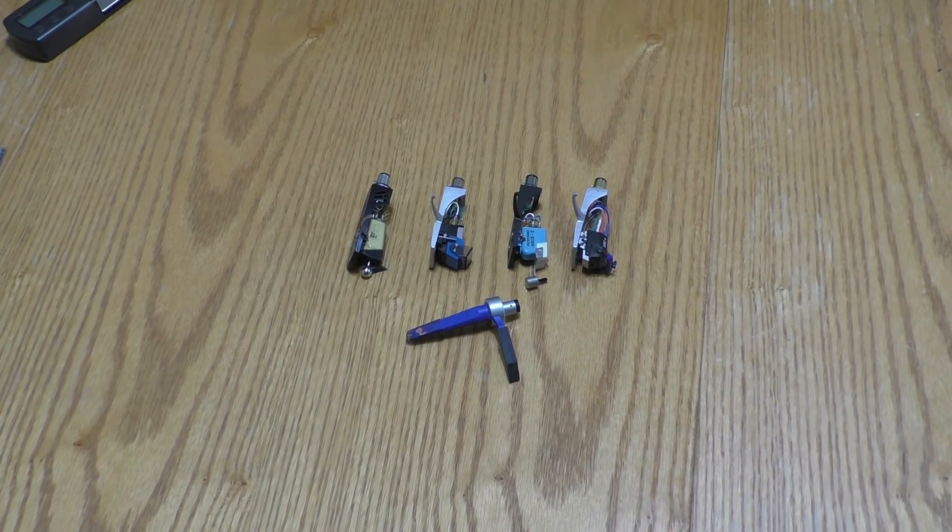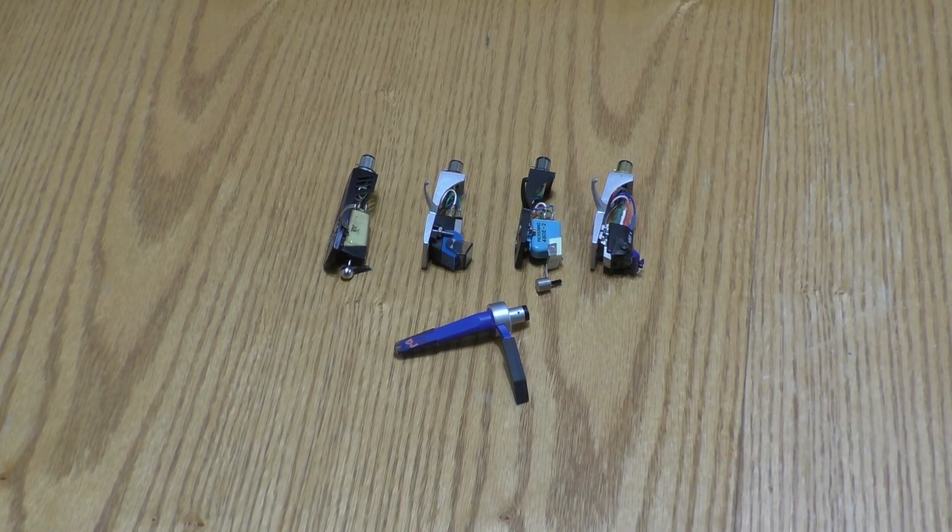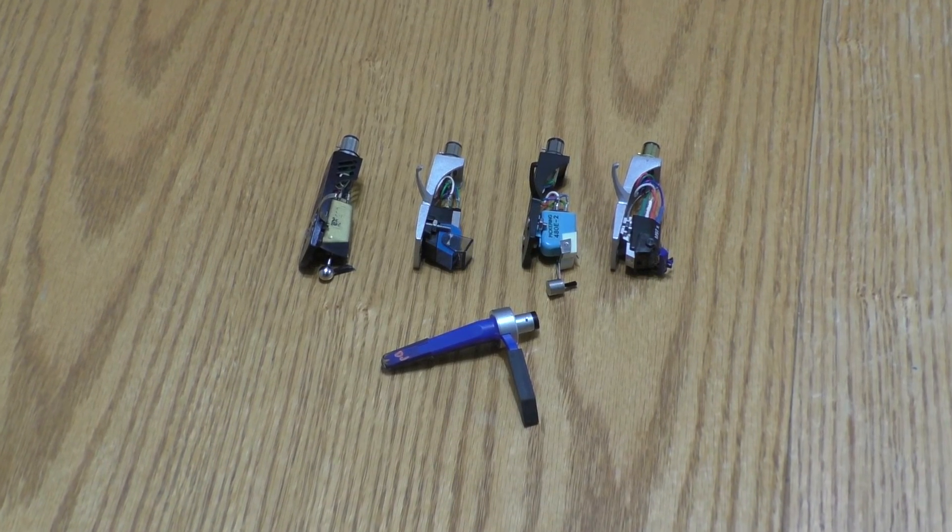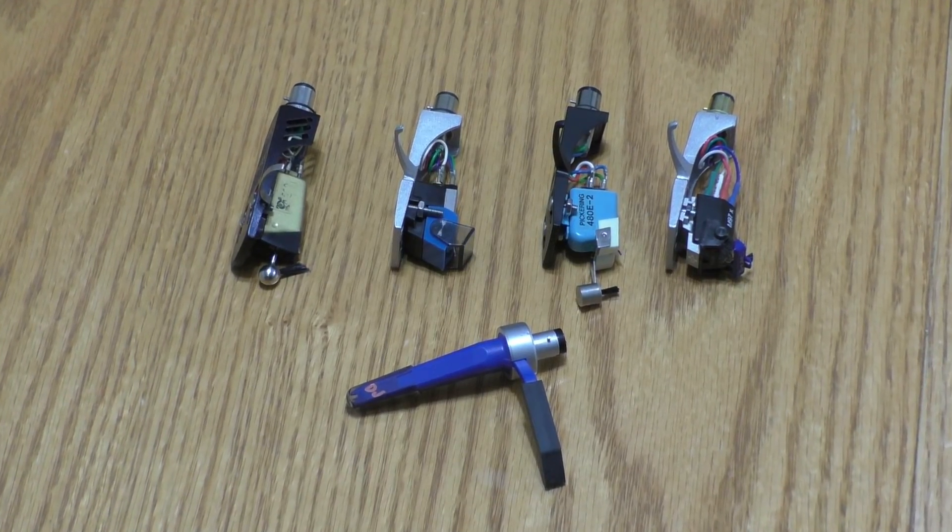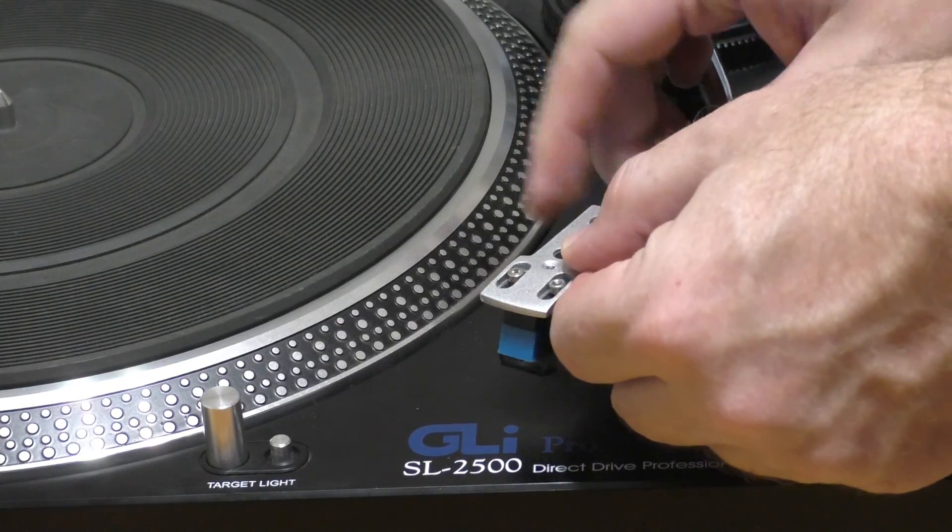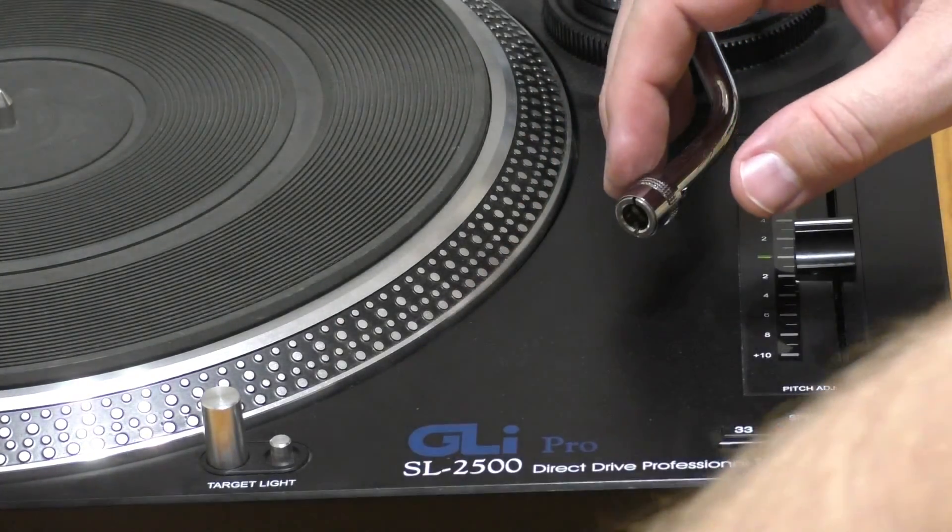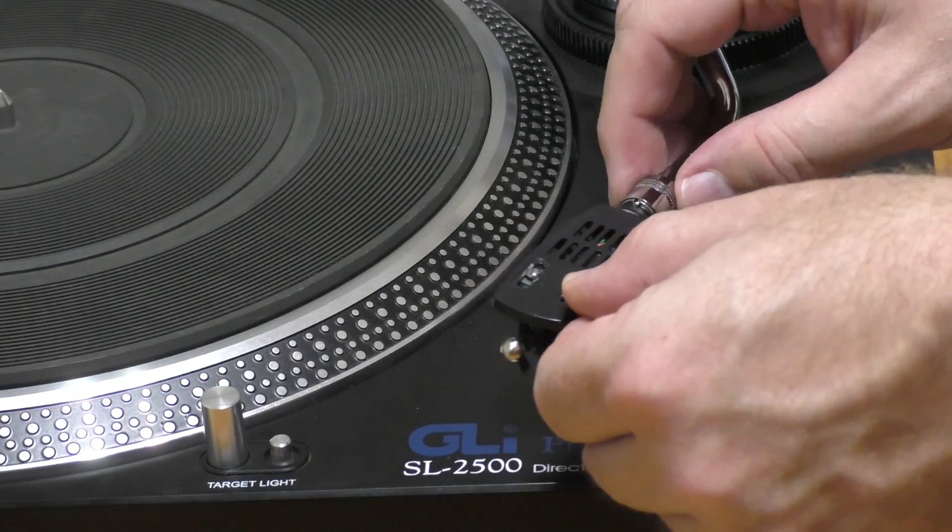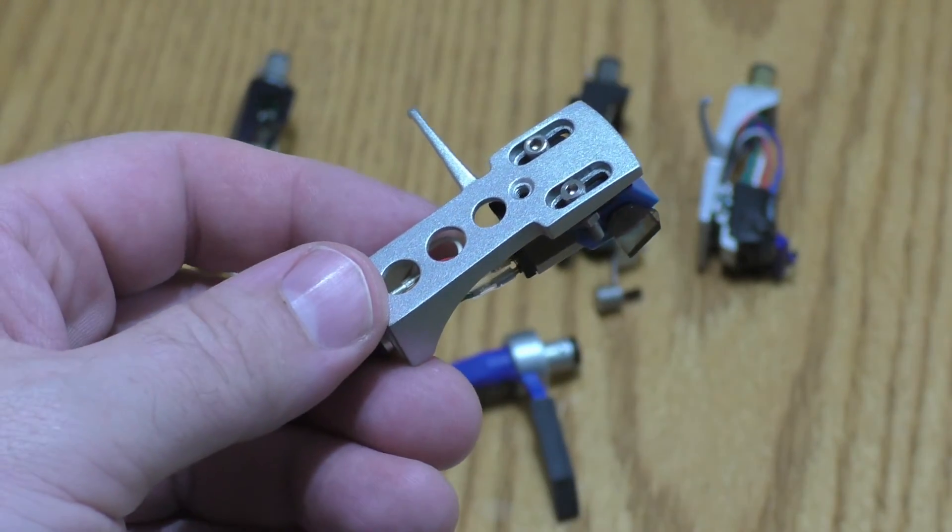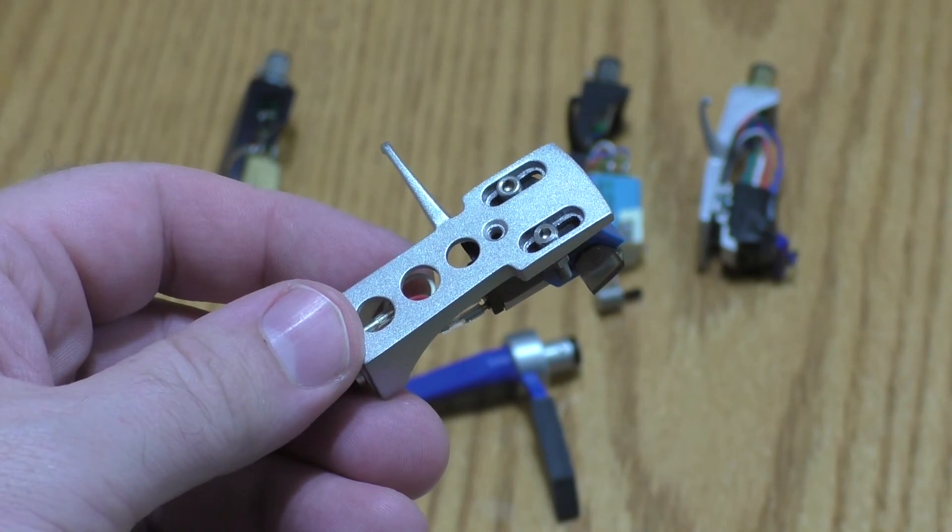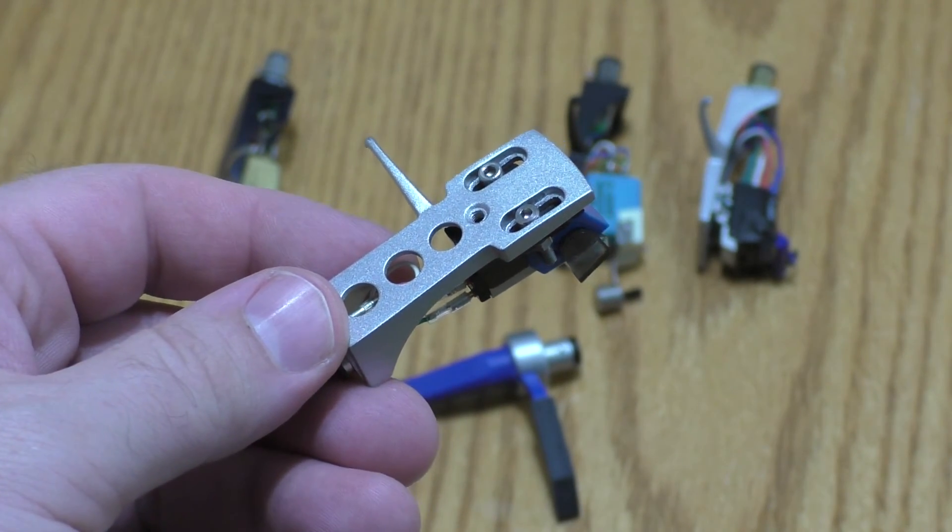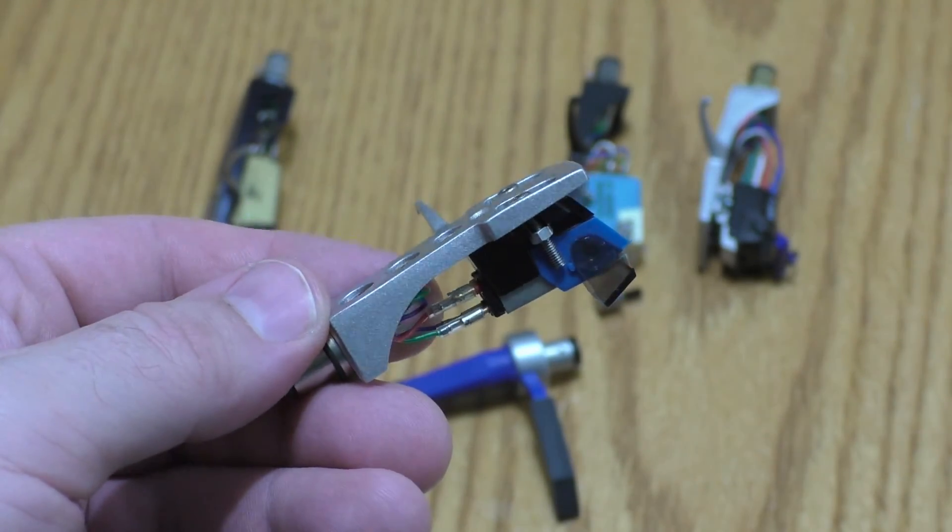I currently own five different phono cartridges with styli that have diamonds ground to slightly different shapes. Mounting cartridges takes time and precision. But if you have a tonearm with a removable head shell, changing out head shells is easy. So for vinyl enthusiasts who like to try out different cartridges, I would suggest purchasing spare head shells and leave the cartridges mounted to them.